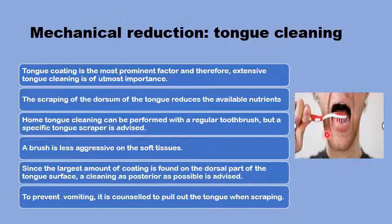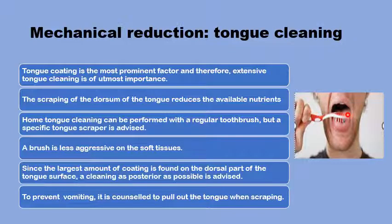The mechanical reduction of the tongue coating is one of the most important aspects in the management of halitosis, as tongue coating is the most prominent factor in bad breath. Scraping the dorsum of the tongue can reduce the available nutrients for microorganisms and also reduce the microorganism load itself. Although this can be done with a soft toothbrush, there is evidence that a special tongue scraper produces better results.